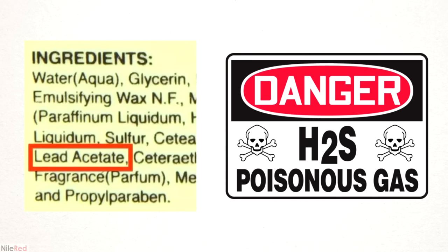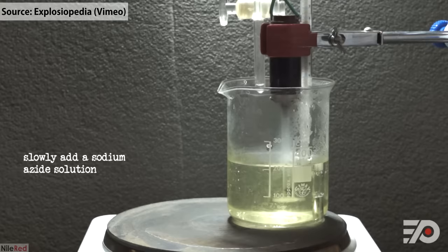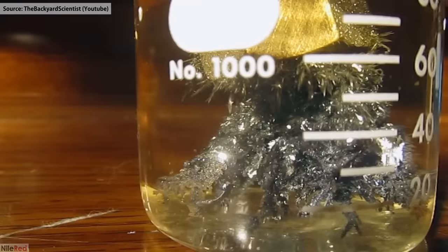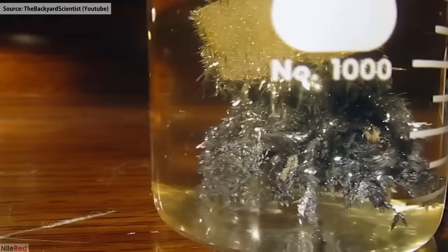Nowadays, lead acetate has only a couple limited uses, like in some men's hair coloring products or to detect poisonous hydrogen sulfide gas. It can also be used to make the high explosive lead azide, but that's pretty dangerous to do. In the future, I plan to do the much safer demonstration, called the Tree of Saturn.